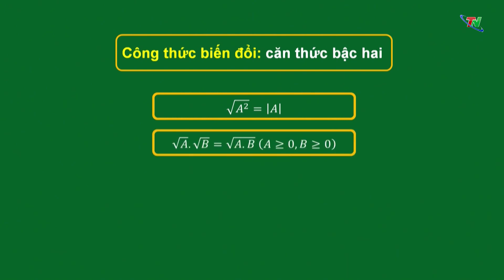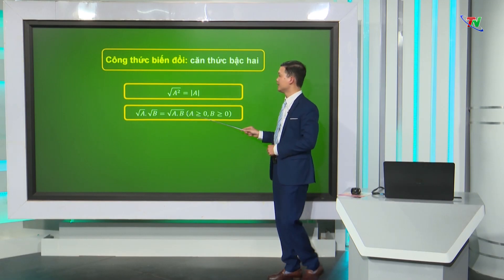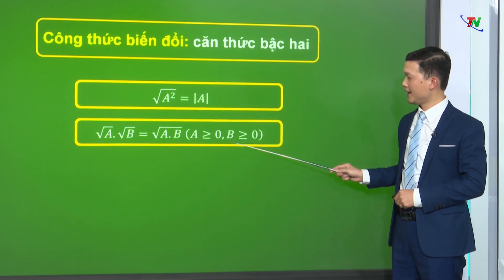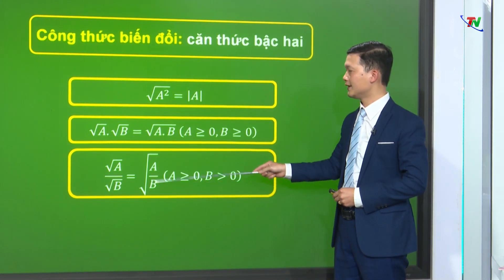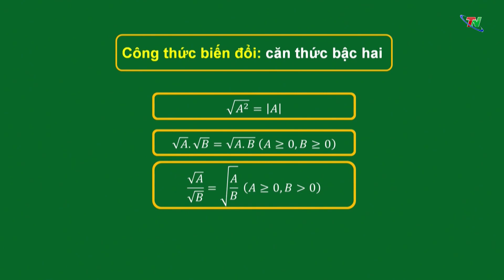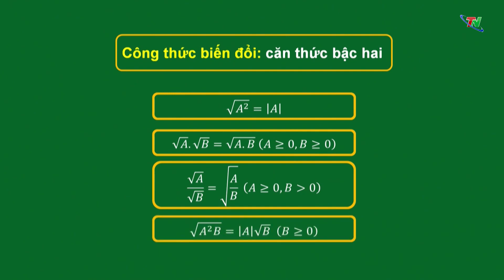Công thức thứ 2 là liên hệ giữa phép nhân và phép khai phương: √A · √B = √(A·B) với điều kiện A ≥ 0, B ≥ 0. Công thức tiếp theo là liên hệ giữa phép chia và phép khai phương: √A / √B = √(A/B) với điều kiện A ≥ 0 và B > 0. Công thức tiếp theo là đưa thừa số ra ngoài dấu căn: √(A²·B) = |A|·√B với điều kiện B ≥ 0.